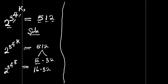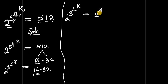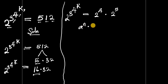Continuing on this part of the board: we have 2^(3^(4^k)) equals 16 times 32. Since 16 is a perfect square, we can write it as 2^4. And 32 is simply 2^5. Now let's consider this identity: if you have a^n times a^m, it is simply equal to a^(n+m). That's what we're going to apply here.